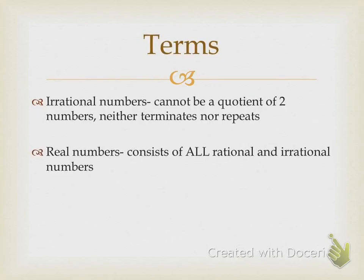The first term you need to know is irrational number. If a number is irrational, it neither terminates nor repeats. What does terminate mean? To cut off. So a terminating decimal ends — like 3.2 or 4.67. Those decimals end; they terminate, so they would be rational numbers. A repeating decimal — for example, 3.3333... goes on forever, so 3 would be repeating.